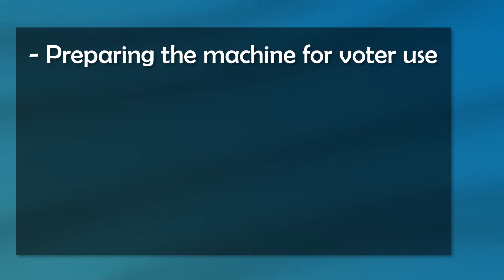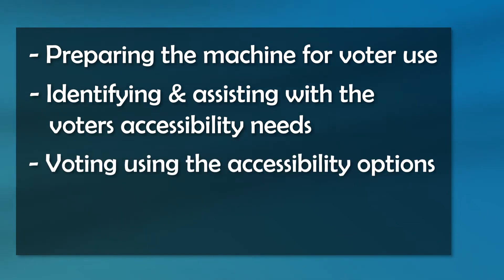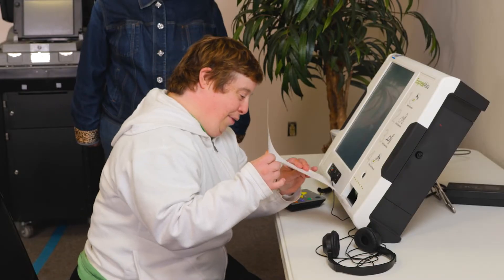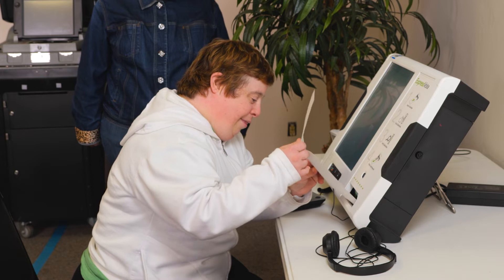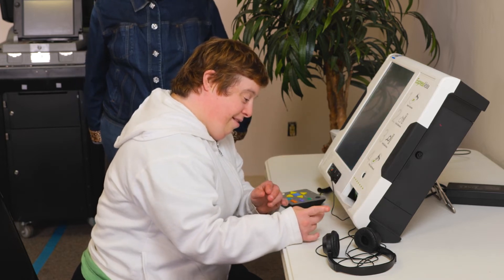Here's what we'll be covering today: preparing the machine for voter use, identifying and assisting with the voters' accessibility needs, voting using the accessibility options, and finalizing the voters' ballot when they are done. Voters will be given a blank ballot at check-in that they will bring to the voting machine themselves.